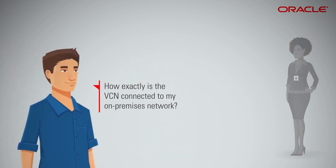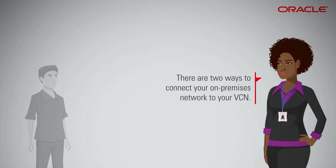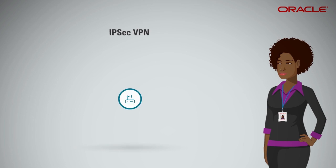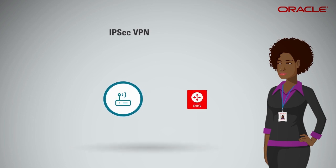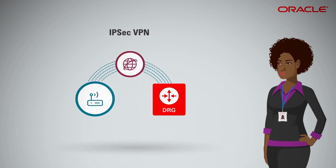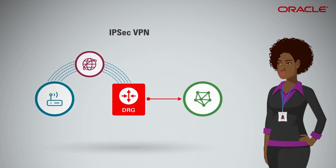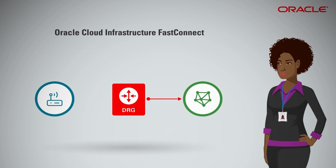How exactly is the VCN connected to my on-premises network? There are two ways to connect your on-premises network to your VCN. IPsec VPN offers redundant IPsec tunnels between your network's edge router and the DRG that you create and attach to your VCN. Oracle Cloud Infrastructure FastConnect offers a private connection between your network's edge router and your DRG. Traffic does not traverse the internet.